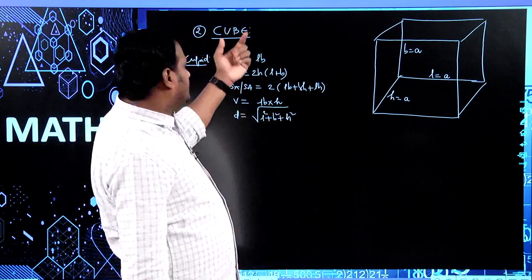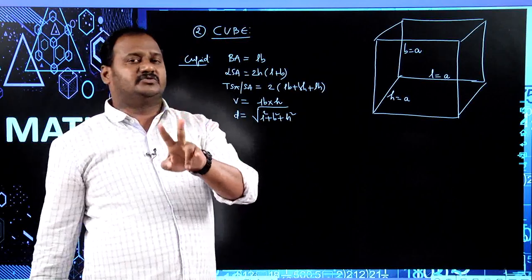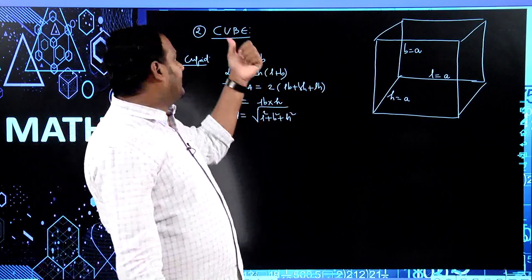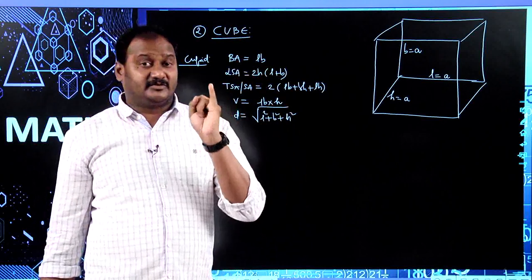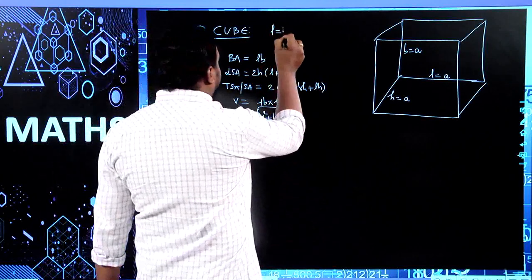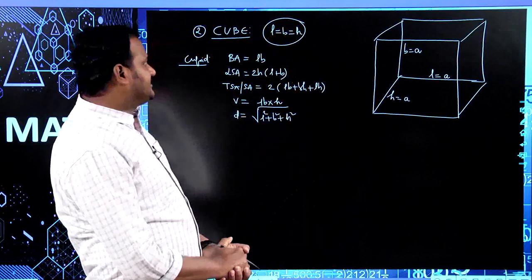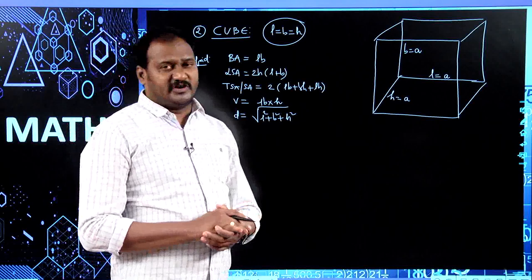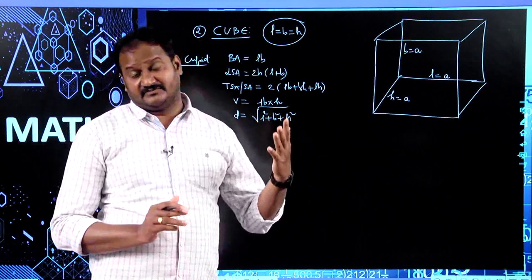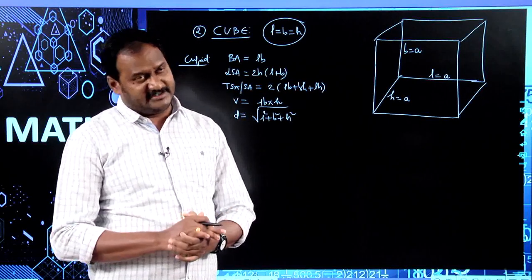When is a cuboid said to be a cube? In a cuboid, at least two dimensions must be unequal. But in a cube, length equals breadth equals height — only then is that solid object called a cube. Like a cuboid, a cube also has 6 faces, and the number of vertices, edges, and faces are the same as a cuboid.